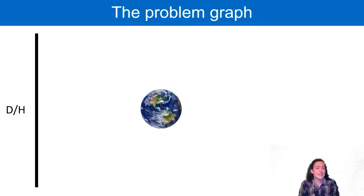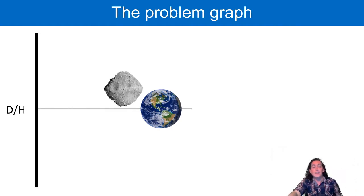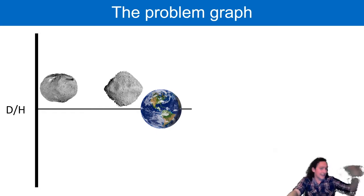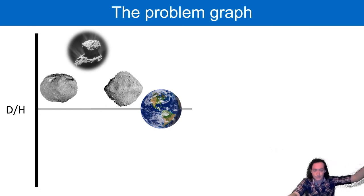All of this comes together to basically try and explain the problem graph, which is the deuterium hydrogen ratio. Deuterium just being a heavy variety of hydrogen or heavy water. Earth kind of sits around here. Water rich asteroids sit slightly heavier. They are consistent with another protoplanet called Vesta, again isotopically heavier. And comets, the poster child for water on earth, are really high, really heavy water involved in those, very high D/H ratios.